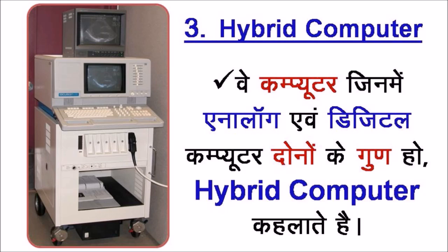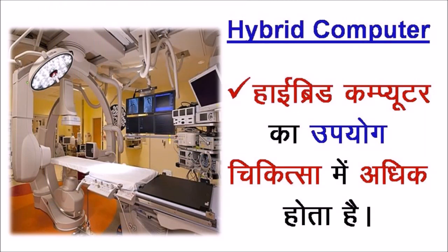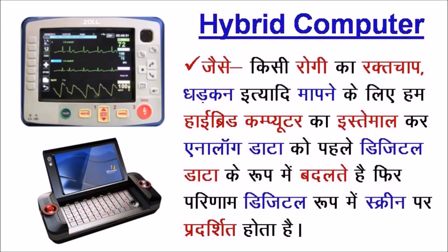तीसरा है Hybrid Computer — वे Computer जिनमें Analog एवं Digital Computer दोनों के गुण हों, Hybrid Computer कहलाते हैं। Hybrid Computer का उपयोग चिकित्सा में अधिक होता है। जैसे किसी रोगी का रक्तचाप यानि Blood Pressure, धड़कन इत्यादि मापने के लिए Hybrid Computer का इस्तेमाल कर Analog Data को पहले Digital Data के रूप में बदलते हैं, फिर परिणाम Digital रूप में स्क्रीन पर प्रदर्शित होता है।